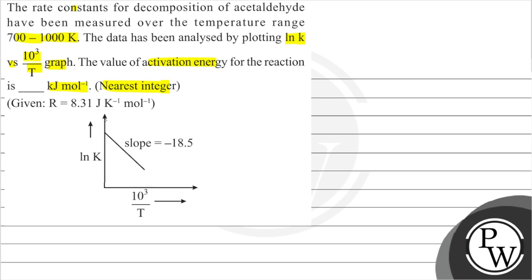The given information is the rate constant versus 10 to the power 3 by T graph, where the slope is given by minus 18.5. We need to find the activation energy.